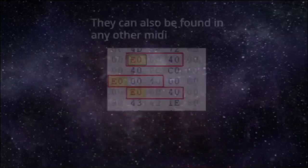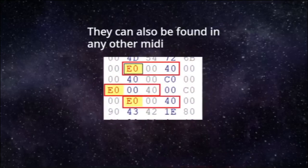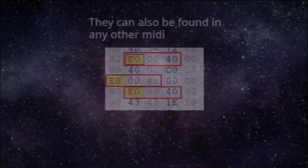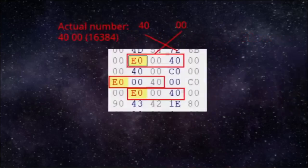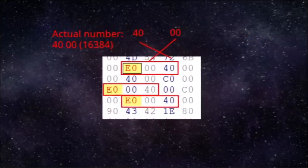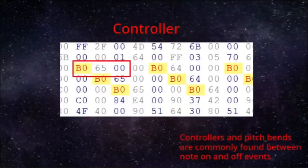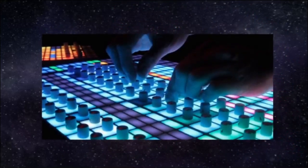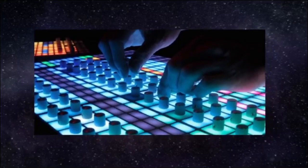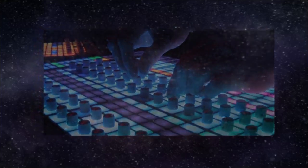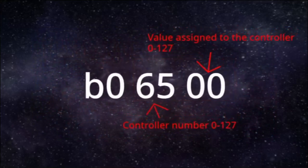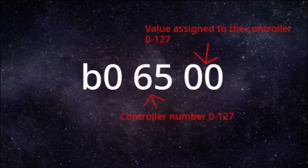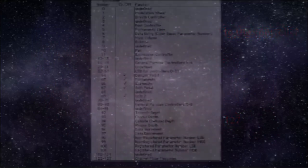Finally, MIDI files also have pitch bend and controllers. Pitch bend is mostly used in guitar MIDIs, and they denote slight changes in pitch required for glissandos. They are stored as ED, then 2 data bytes — the first data byte is the rightmost byte and the second is the leftmost byte. Controllers are similar to pitch bend, except they start with B. They control things like dynamics, sustain, and modulation for a specific channel, denoted by the second letter of the B byte. They have 2 data bytes: the first is the controller number from 0 to 127, and the second is the value assigned to the controller from 0 to 127. You can reference a list of controllers to see what you have to change.